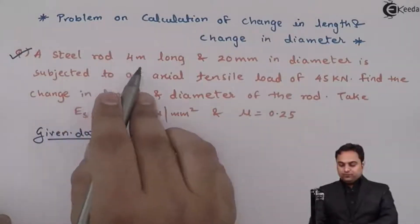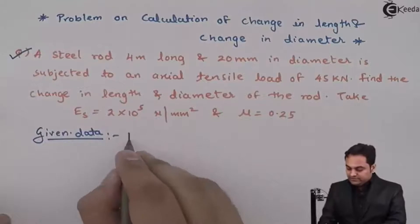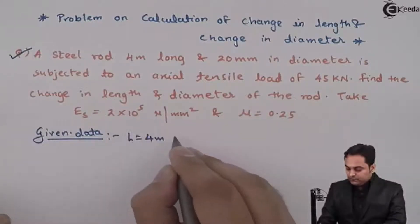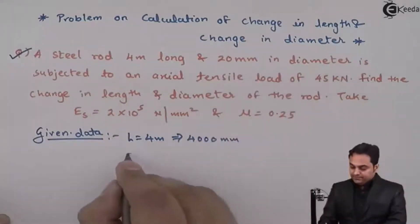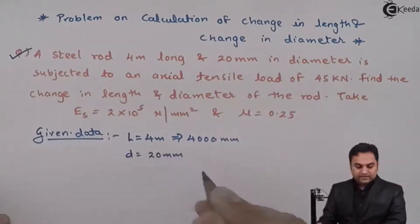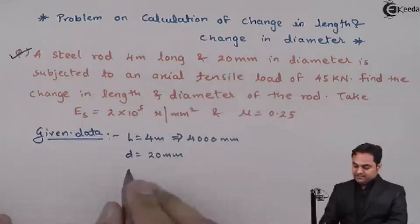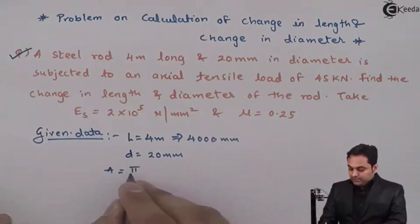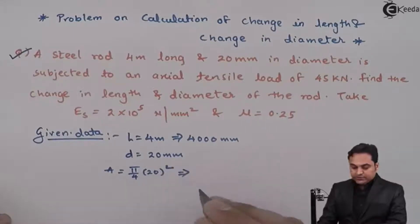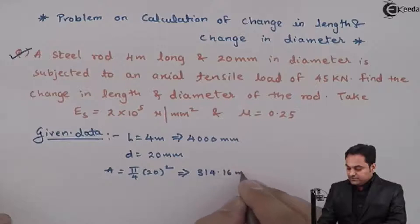A steel rod 4 meter long, length is given as 4 meters so it is 4000 mm, and 20 mm in diameter D. Now once diameter is given I can calculate area in the data itself. So area will be π/4 into diameter square which is 20 square, so my answer is 314.16 mm square.